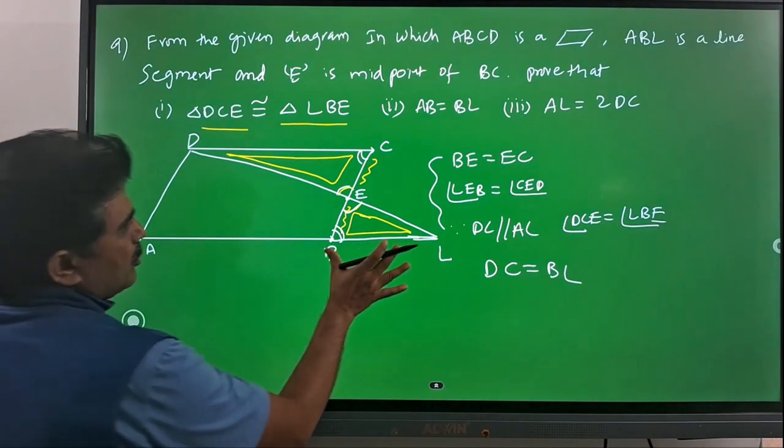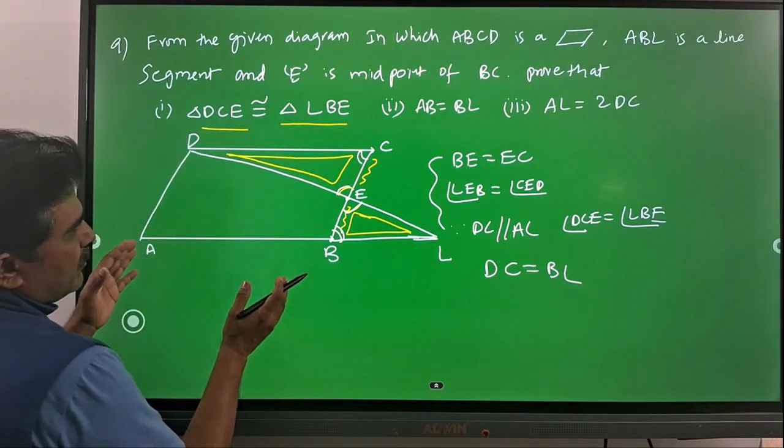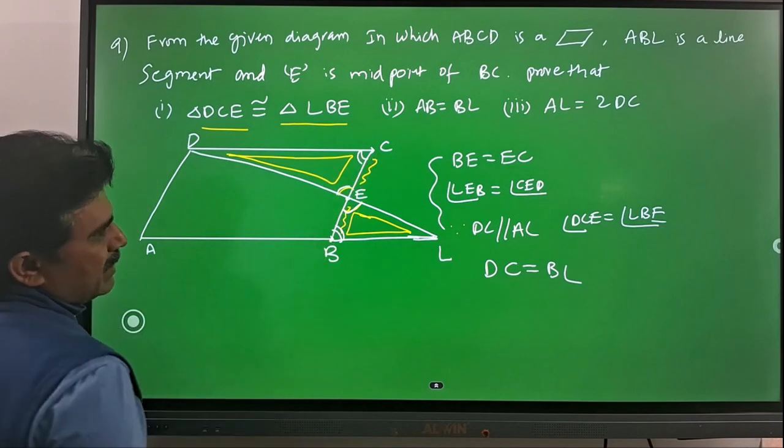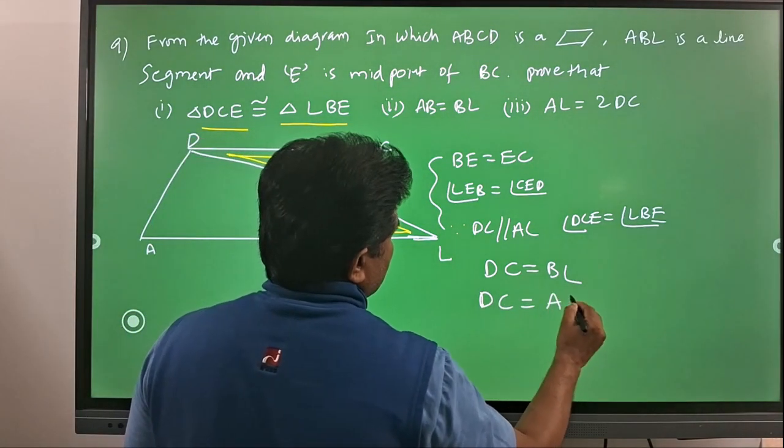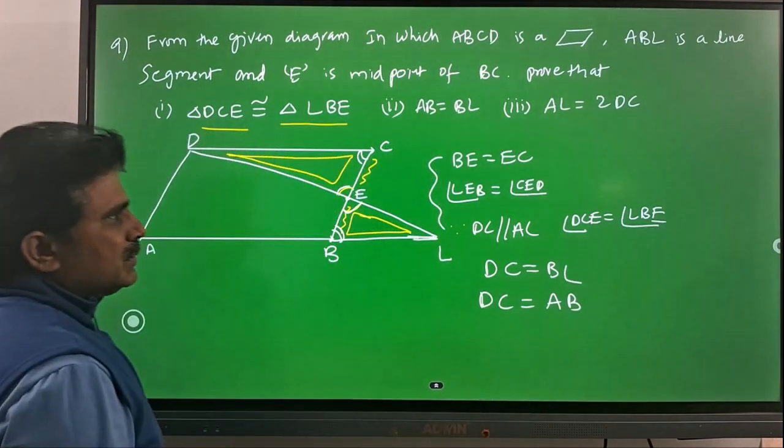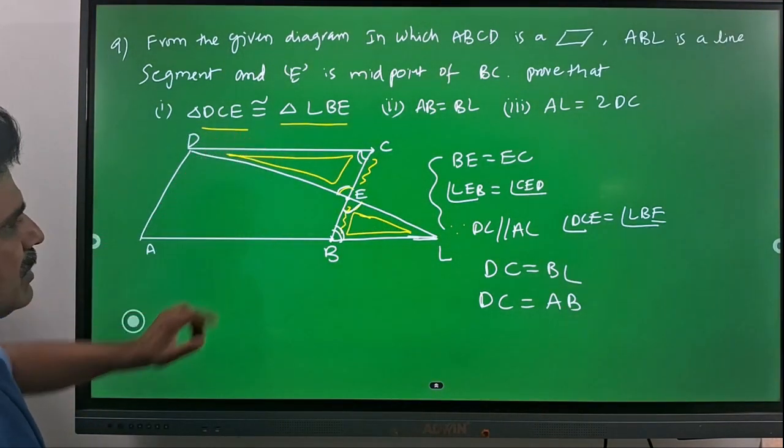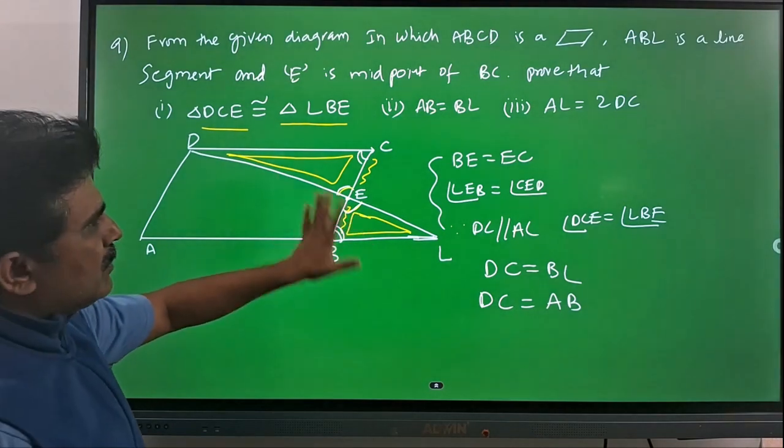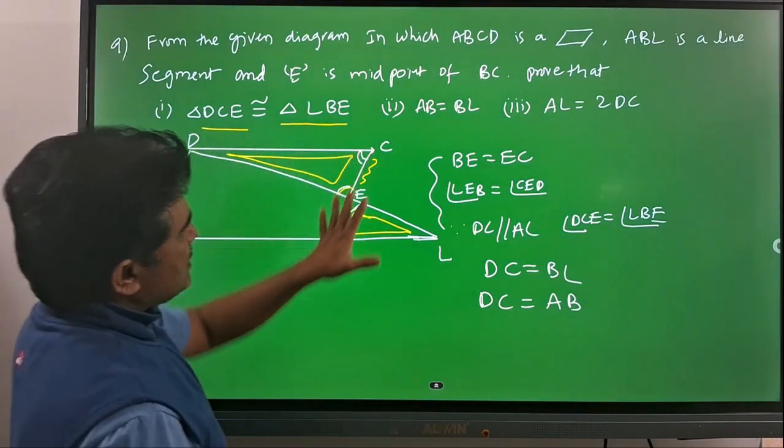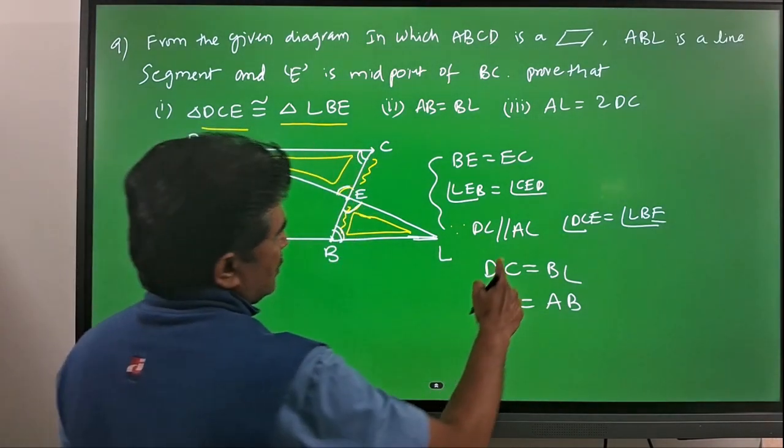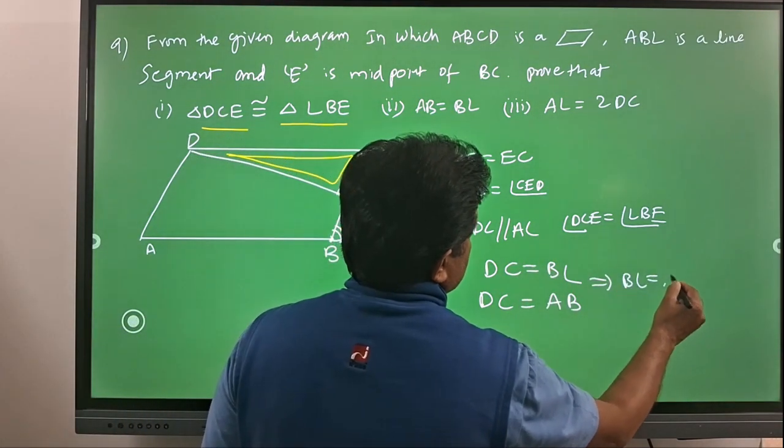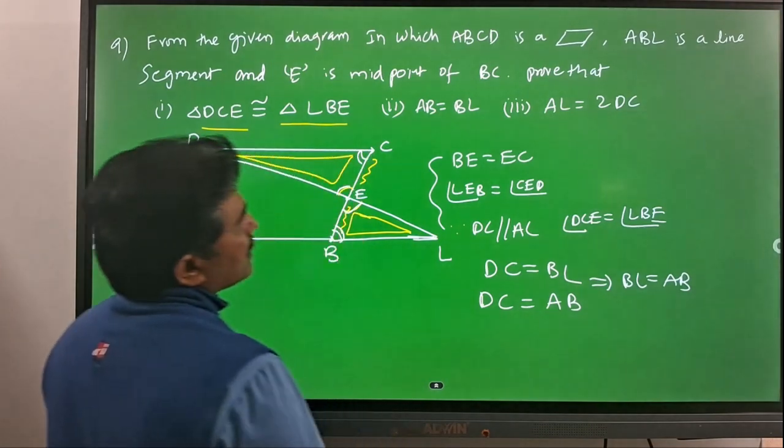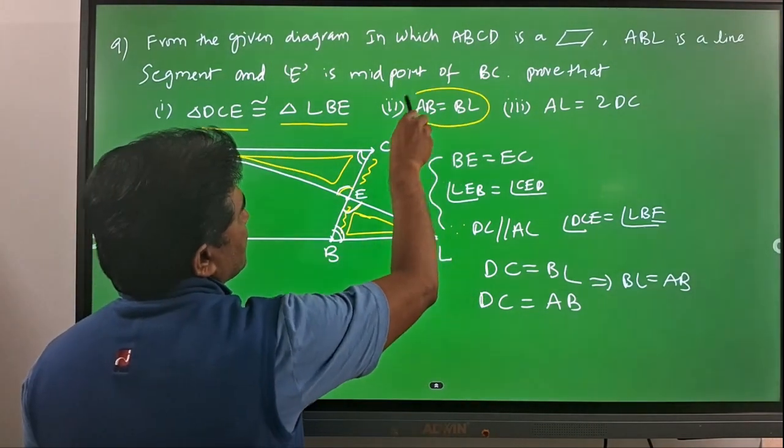When DC equals BL, we already know in the parallelogram that DC equals AB. From the parallelogram we can write DC equals AB. From congruency we can write DC equals BL. From these two we can conclude that BL equals AB. AB equals BL, proved.